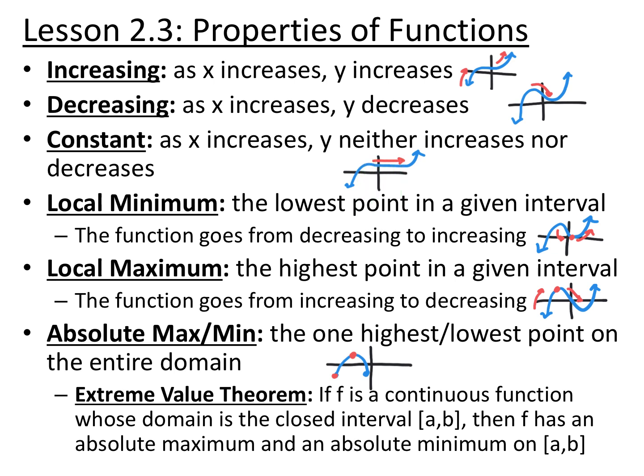A local minimum is the lowest value in a specific interval. It's wherever your graph goes from decreasing to increasing — it has to make that turnaround, like the bottom of a parabola. A graph can have zero local minima, one, or an infinite number.